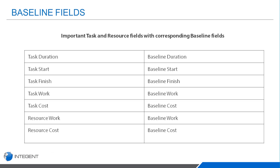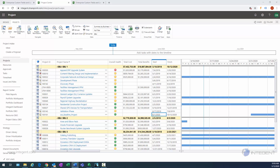When it comes to baselines, there are a number of different fields that are saved as part of this baseline process. You have task fields — task duration, work, cost, as well as start and finish — and you also have resource fields and summary level fields that are going to be saved. You can save the baseline in a couple of different places: you can save it in Project Online when you're web editing, and you can save it in the desktop client as well. You do have many more capabilities in the client for saving baselines.